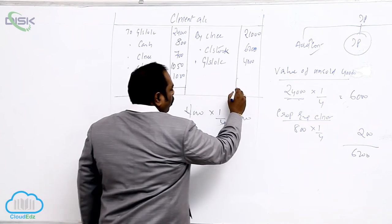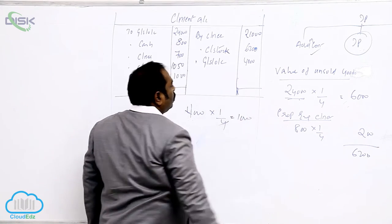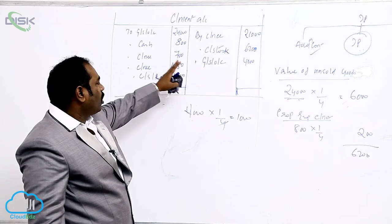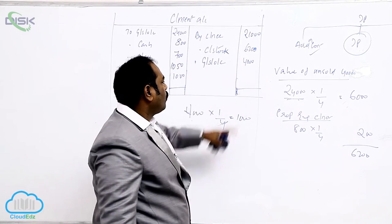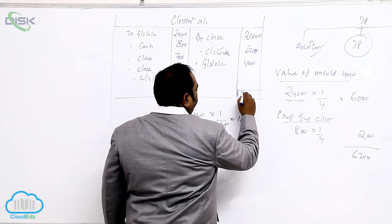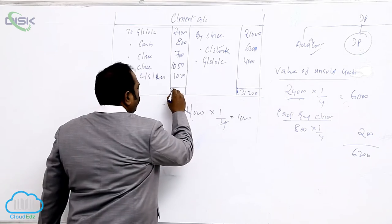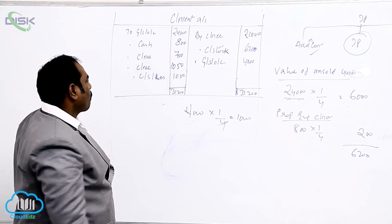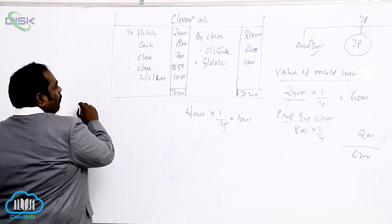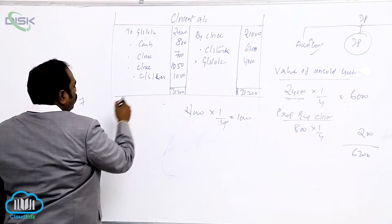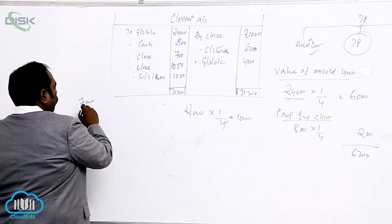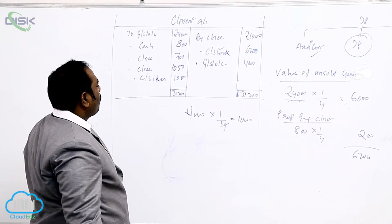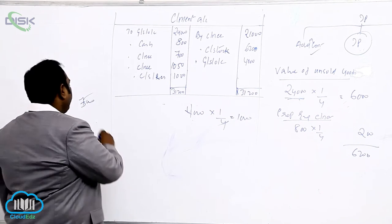How to find out profit or loss? Now check it out which side is more. Credit side is more than debit side. What is total on debit side? Credit side 26, 27, 31,200. Out of this 31,200, 31,200 minus 24 is 31 minus 24 is 7. 7,000 minus 2,000 is 5.